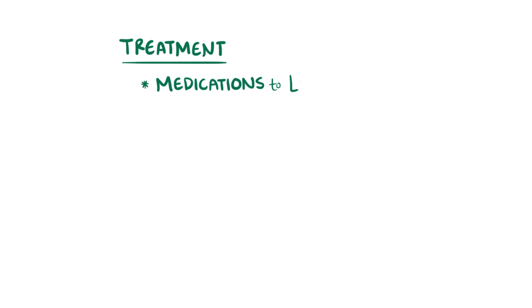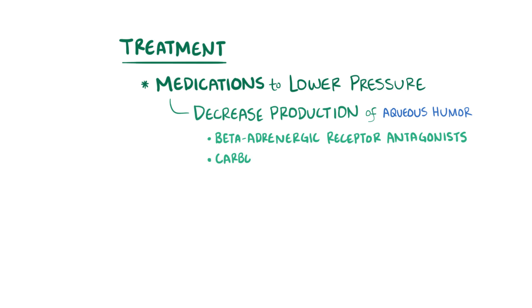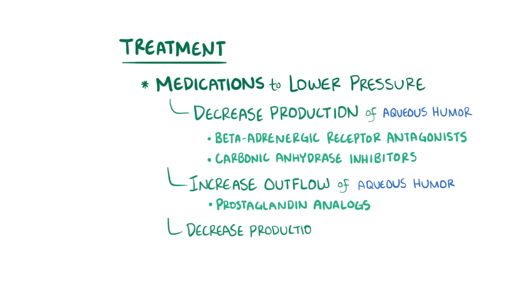Even though glaucoma is not curable, it can be slowed with treatment. If the underlying issue is intraocular hypertension, then it can be managed by taking medications that decrease the pressure in the eye. This can be done by decreasing the production of aqueous humor with medications like beta-adrenergic receptor antagonists and carbonic anhydrase inhibitors, or by increasing the outflow of aqueous humor by taking prostaglandin analogs. Some medications both decrease production and increase outflow, like alpha-adrenergic agonists.